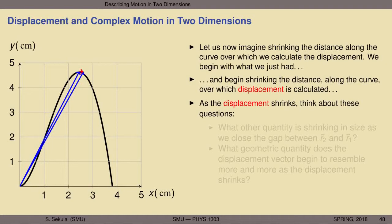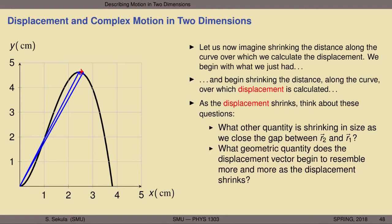As the displacement is shrinking, we can think about two questions. First: what other quantity is shrinking in size as we close the gap between r2 vector and r1 vector? Second: what geometric quantity does the displacement vector begin to resemble more and more as the displacement shrinks? Pause the video, consider these questions, and see if you can come up with even vague answers before we move on.